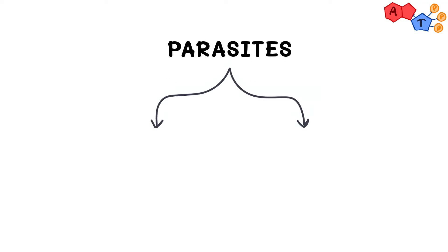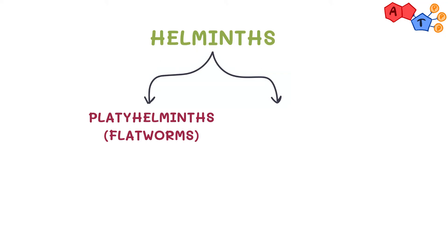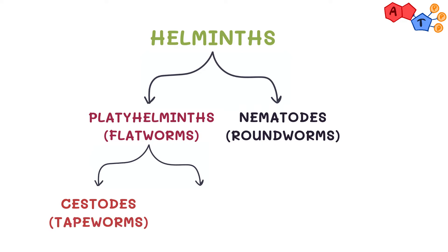Generally speaking, parasites can be divided into two main groups: protozoa and helminths. Helminths are then subdivided into two big groups: platyhelminths which are flatworms, and nematodes which are roundworms. The platyhelminths group is further categorized into cestodes which are tapeworms and trematodes which are flukes. Keep in mind that worm infections are often accompanied by eosinophilia.